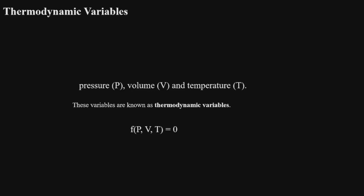Since pressure, volume, and temperature are not independent variables, the thermodynamic state of a homogeneous system is completely determined by knowing any two out of these three variables. For example, for an ideal gas in a static condition, the equation of state is PV = RT, where R is the universal gas constant.